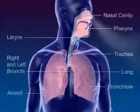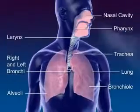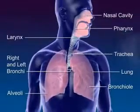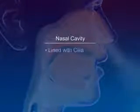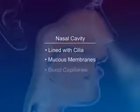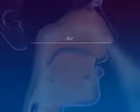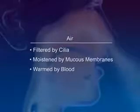The respiratory system moves air through the nose, pharynx, larynx, trachea, and bronchus to the alveoli, where gas exchange between oxygen and carbon dioxide occurs. Nares are the openings to the nose. The nasal cavity is lined with cilia, mucous membranes, and blood capillaries. The air is filtered by cilia, moistened by mucous membranes, and warmed by the blood.